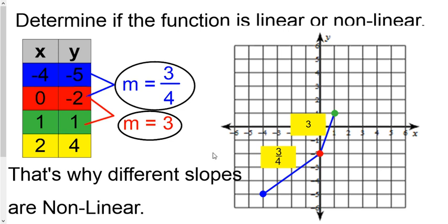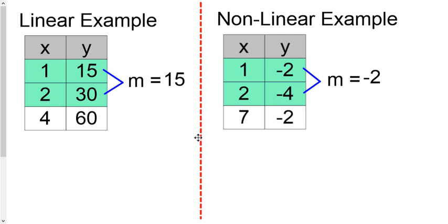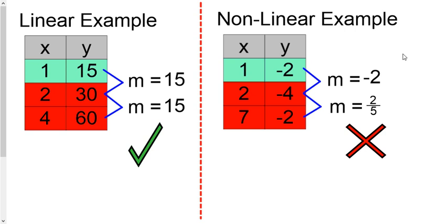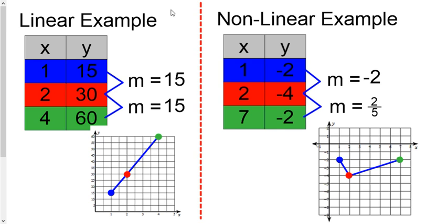One last recap: let's get the slope for the first two rows of both examples at the same time, then slide down and get the slope from the second and third rows. In the linear example, they have the same slope; in the non-linear example, they have different slopes. Let's graph all three dots simultaneously from both examples — the blue dots, then the red dots, then the green dots. As you can see, the linear example stays perfectly straight no matter what. In the non-linear example, because you have different slopes, it bends the line so it can't be straight — it is non-linear.